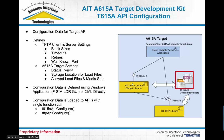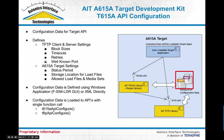Both the 615A target API and the TFTP API have configure functions used to input specific configuration information about how they're supposed to operate the protocols. For TFTP, that would define block sizes — how large files are chopped up for transfer — timeouts, retries, how long to wait before retrying a message that doesn't get acknowledged, how many times to retry, and also a well-known port — which port the server is listening on for incoming requests.